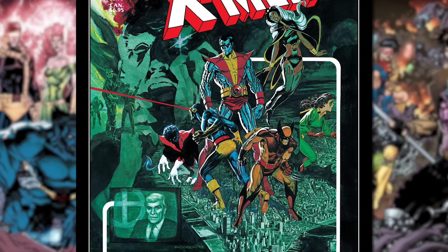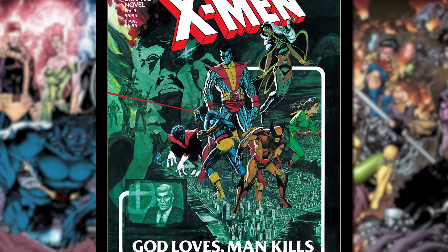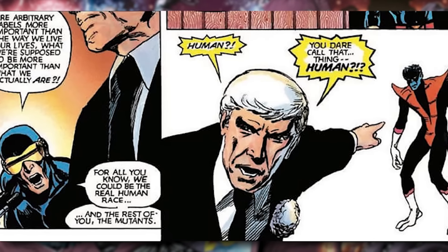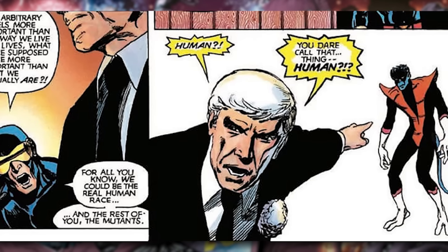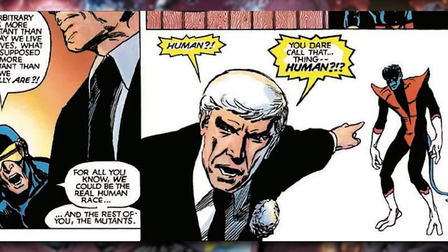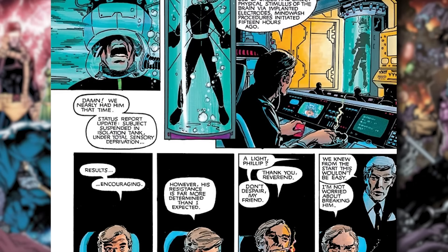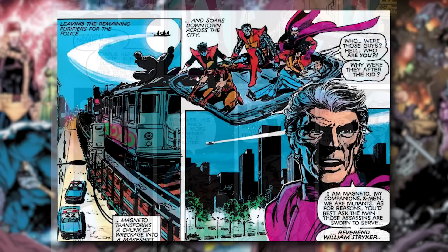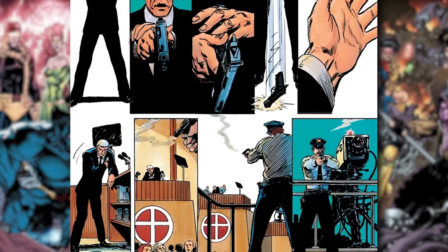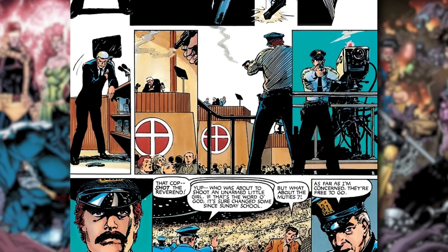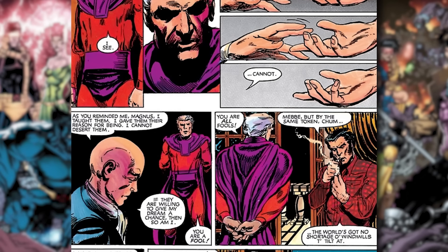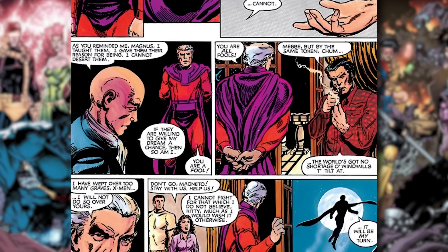God Loves, Man Kills. Later, anti-mutant sentiments would continue to rise as Reverend William Stryker came into power. After he kills his wife and deformed mutant son, Stryker begins to preach that the mutants are an abomination and that the Lord wants them wiped out. Stryker kidnaps Charles Xavier, planning to use him to wipe out the world's mutants with his telepathic powers. The X-Men must team up with Magneto to save both Xavier and mutant kind. The X-Men manage to trick Stryker into revealing his plan to the world, defeating him and taking him into custody. With Xavier saved, Magneto bids farewell to the X-Men, reminding them that there will always be men like Stryker that mean to do him harm.